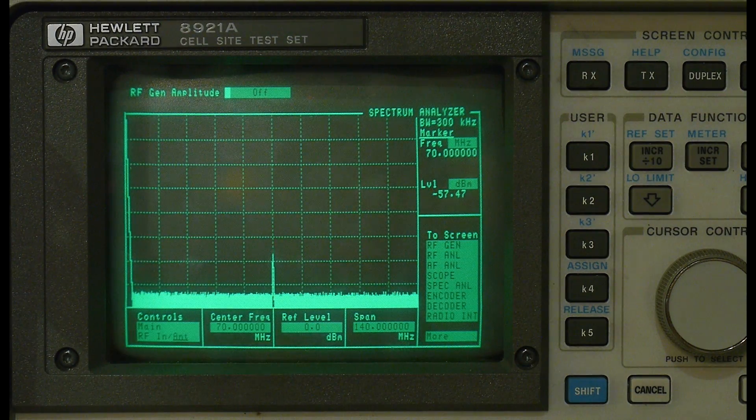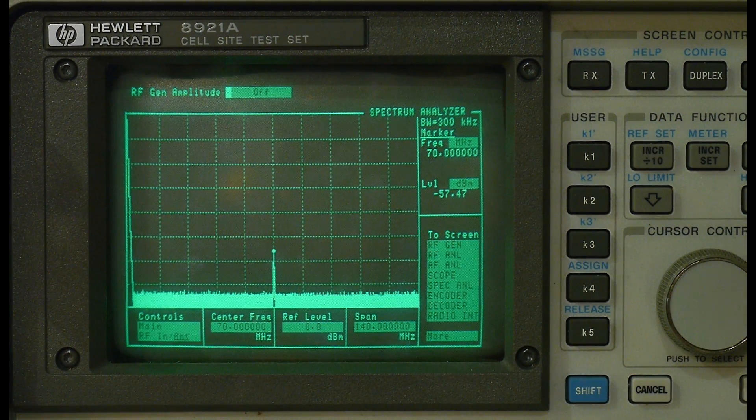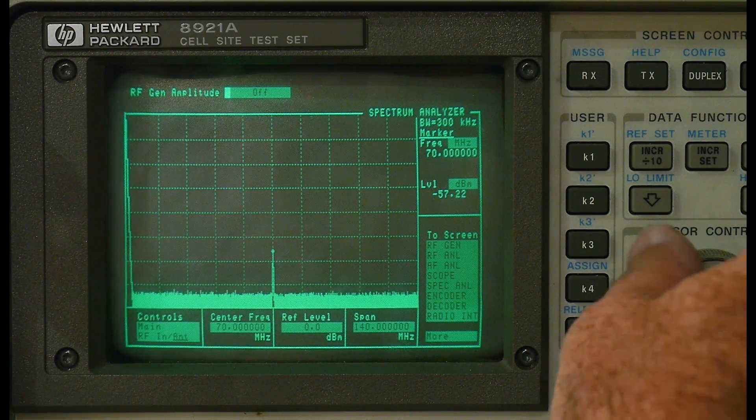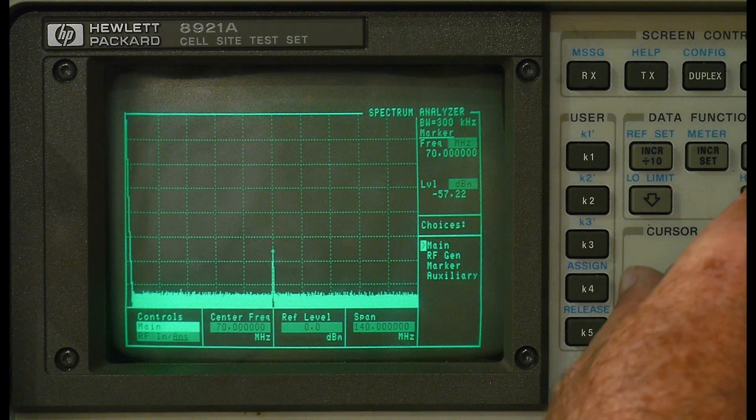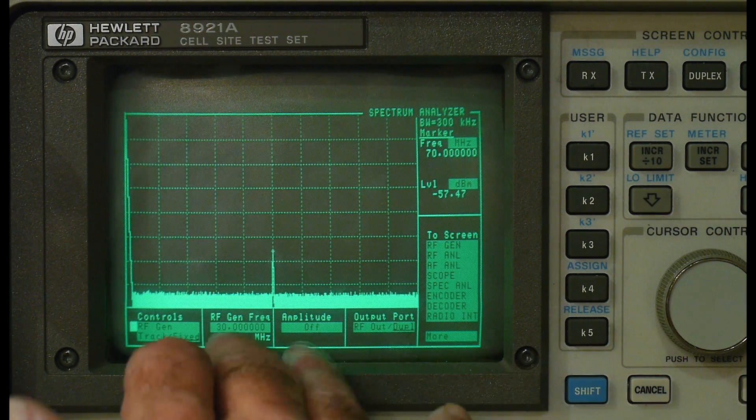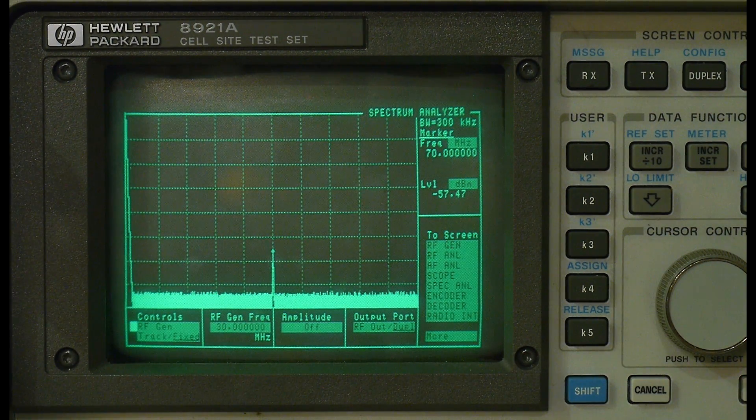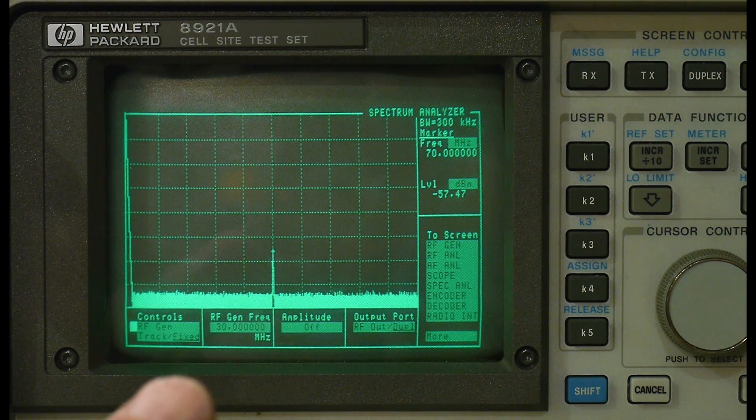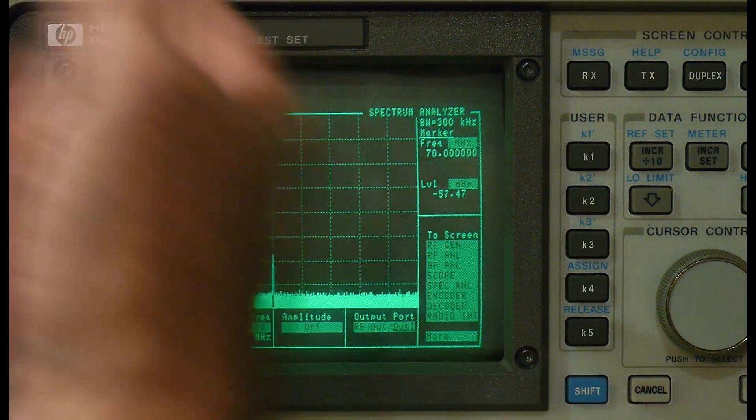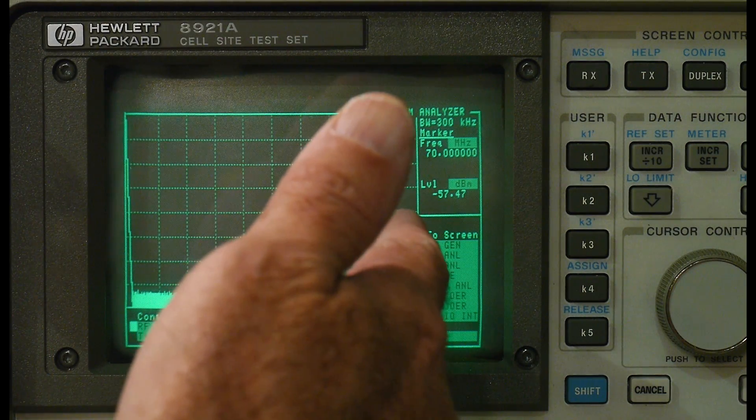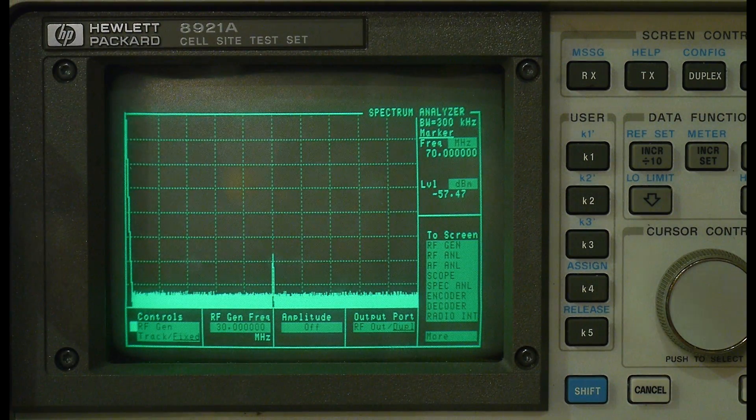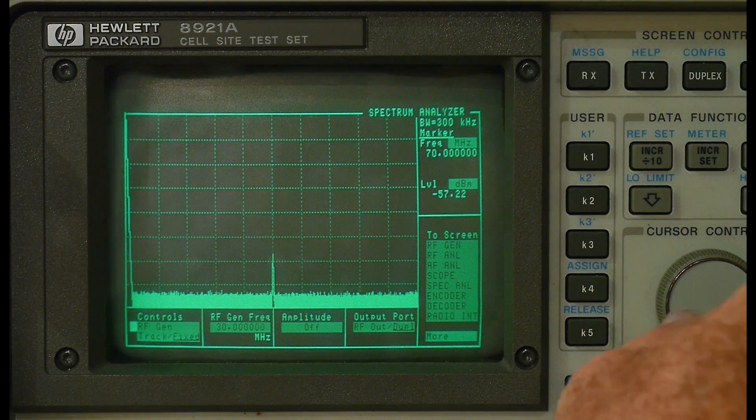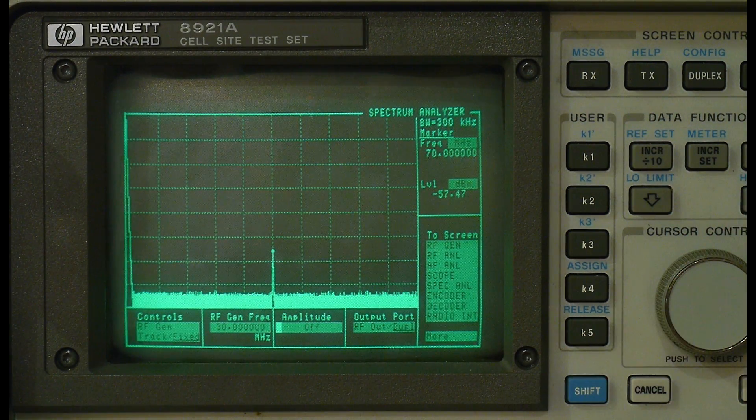So now we're going to mix it with a signal, and so let's go ahead and mix it with, all right we're going to mix it with 30 MHz, right? So we're going to start at 70 and we're going to mix it with 30. So on the positive side we should get 100, and on the negative side we should get 40.